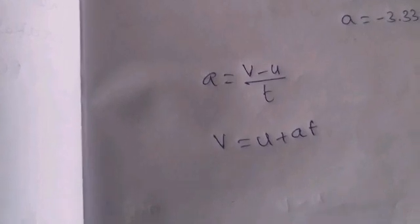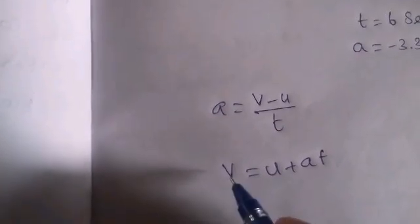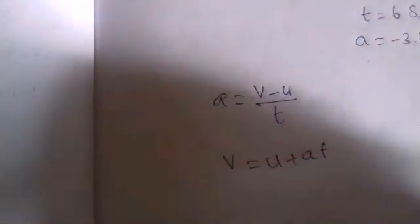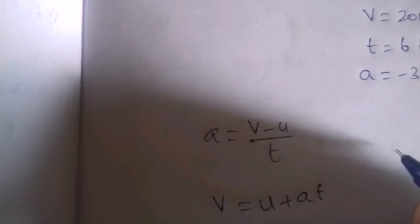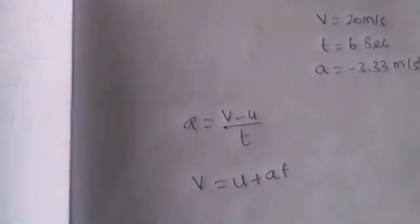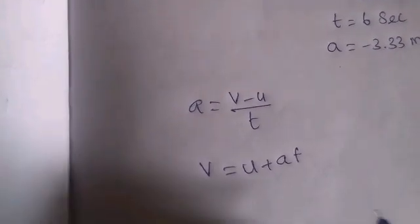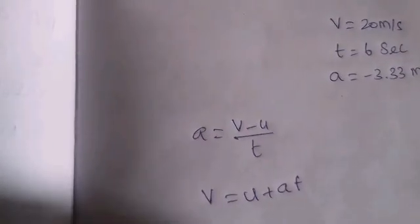What do we call distance traveled? Distance traveled and velocity have the same relation. Rate of change of distance traveled is velocity. Rate of change of velocity is acceleration.